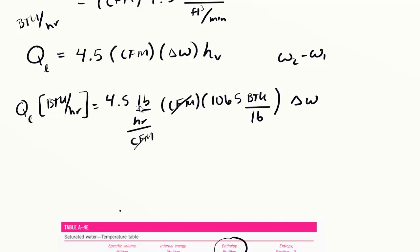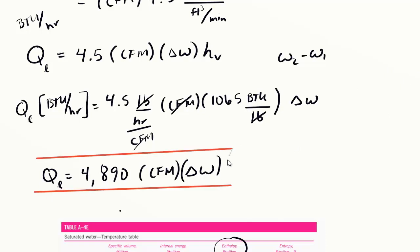What we get out is BTU per hour. The CFM cancels, the pound cancels, and the absolute humidity ratio is unitless. Our final formula is around 4,890 multiplied by your cubic feet per minute of air multiplied by your difference in absolute humidity ratio. That is our shorthand formula for latent heat processes, which will serve you well in your endeavors as an HVAC engineer. Hope to see you in the next videos.